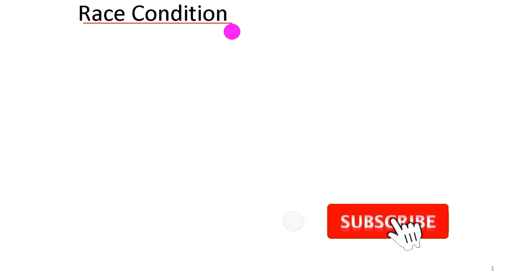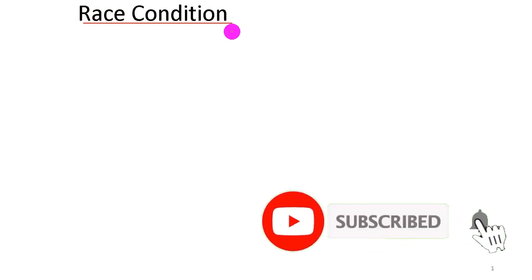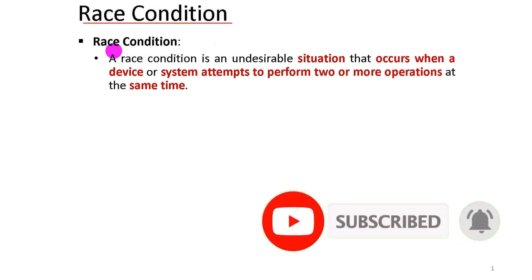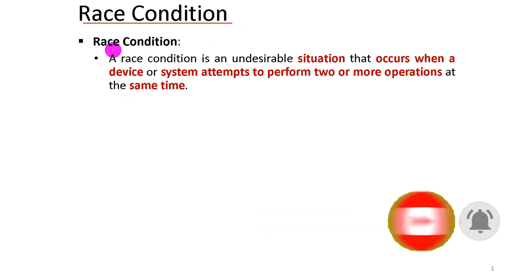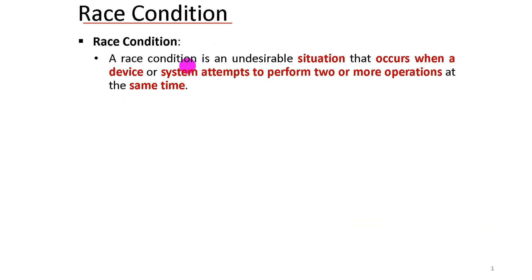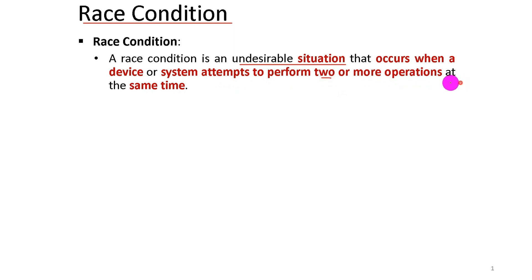A race condition in operating system process management. A race condition is an undesirable situation that occurs when a device or a system attempts to perform two or more operations at the same time.